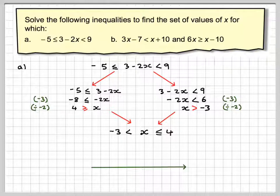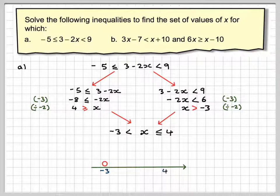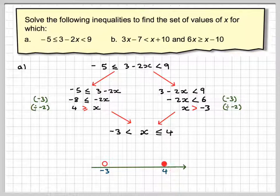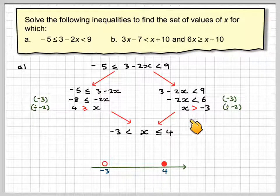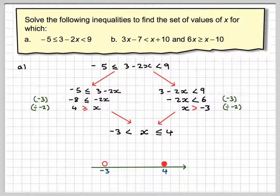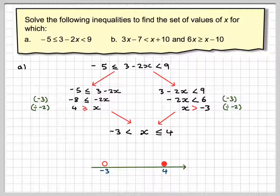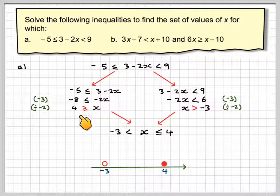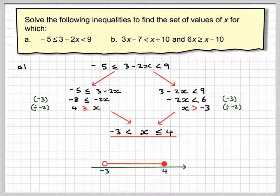Sometimes it's easier to put that on a number line. Put on minus 3 - it can't be equal to, so it's an open circle. Put on 4 - that's a closed circle. This means x is greater than minus 3, so we're going that way. And x is less than or equal to 4, so we're going that way. The line joins them up like that.